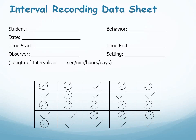Interval recording goes beyond frequency or event recording that we covered in part two of this video series. With frequency recording you know that a behavior happened a certain number of times during your observation period. With interval recording you're able to determine if it happened more so earlier or later in the observation session — you obtain more defined, more refined results.